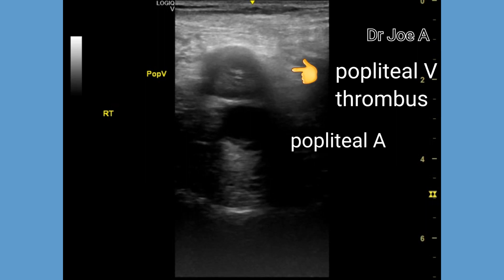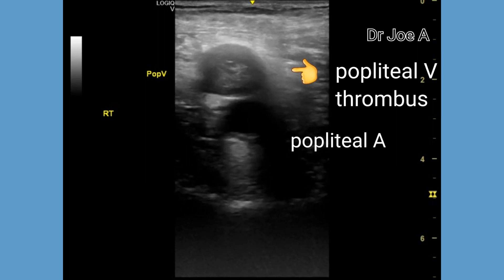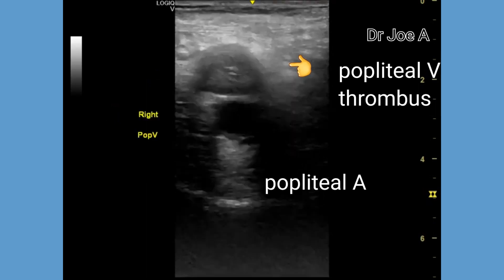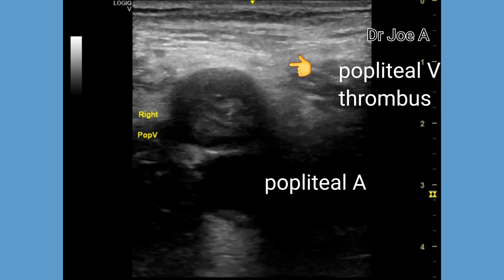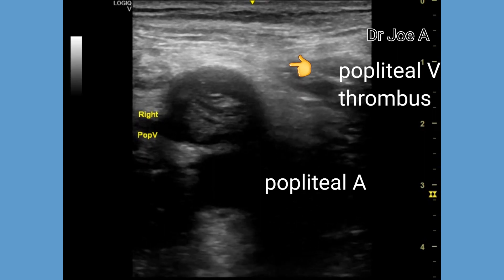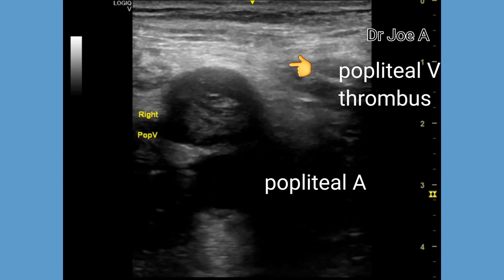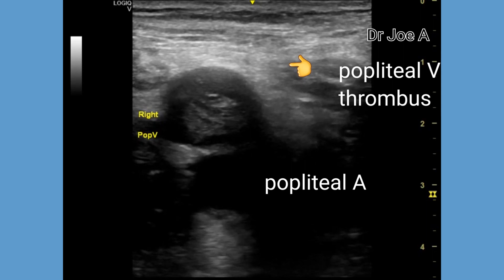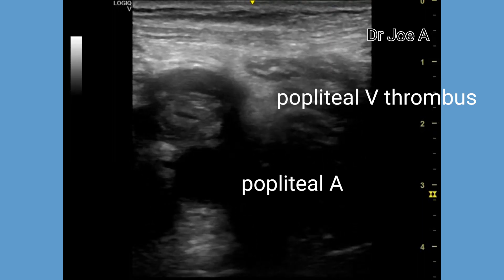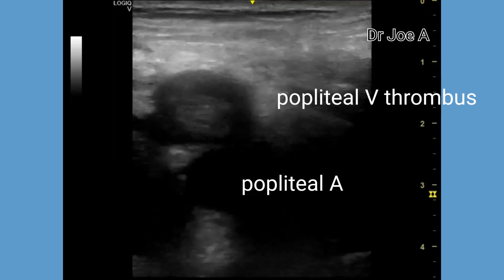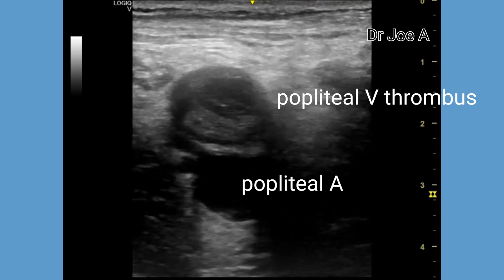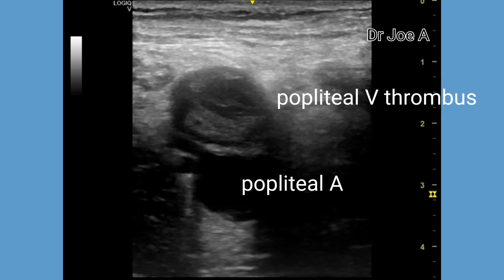As we go down to the right popliteal vein, there too we find an echogenic thrombus within the popliteal vein. The popliteal vein is seen superficial to the popliteal artery. Here too we can see a near total obstruction of the popliteal vein by the large thrombus. The diameter of the popliteal vein is significantly increased compared to that of the popliteal artery, suggesting an acute or subacute thrombosis.